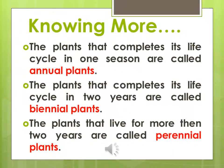Now let us talk about plants on the basis of their life span. The plants that complete their life cycle in one growing season are called annual plants — for example pea, maize, watermelon, potatoes, rice, wheat, etc.